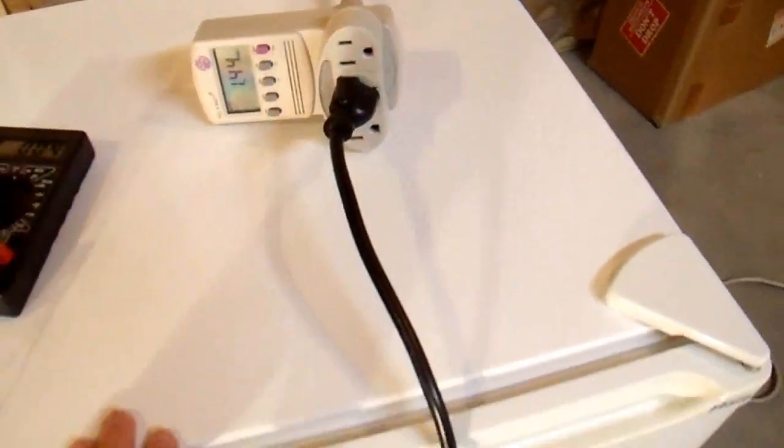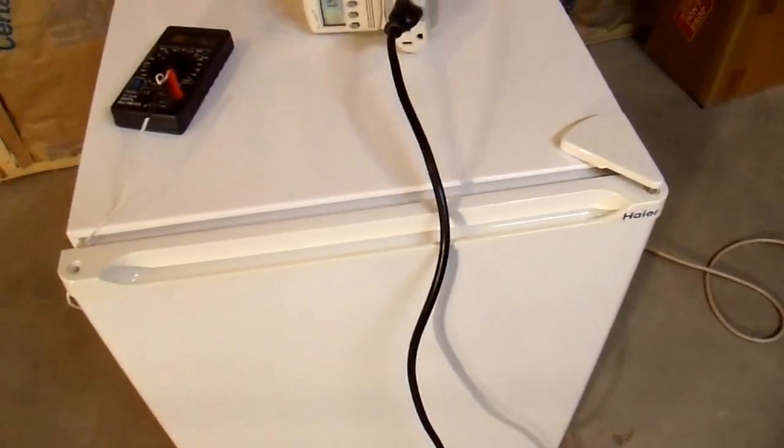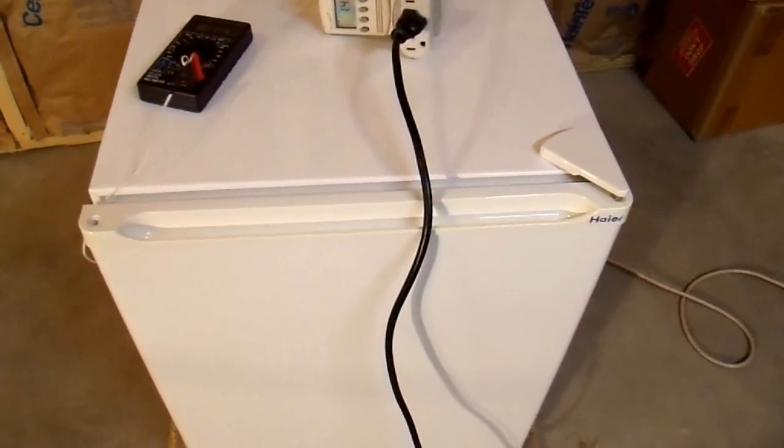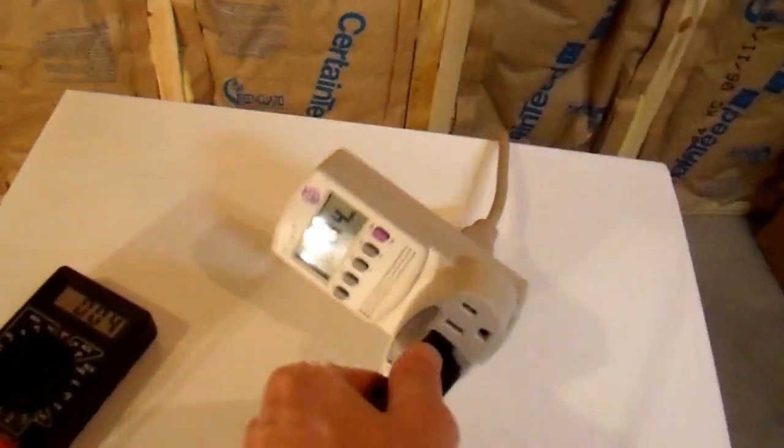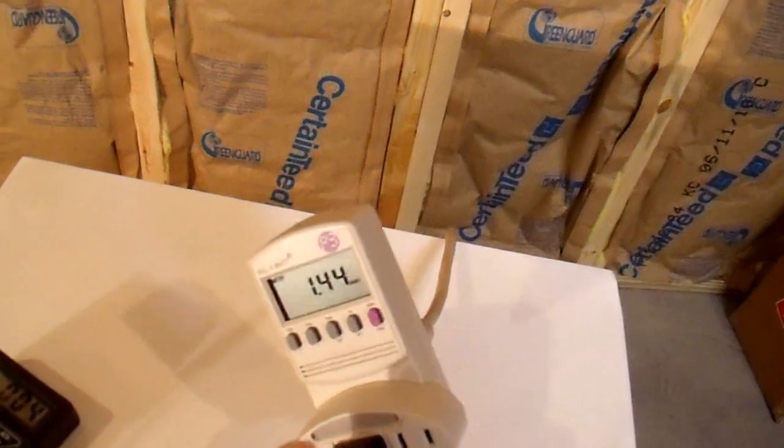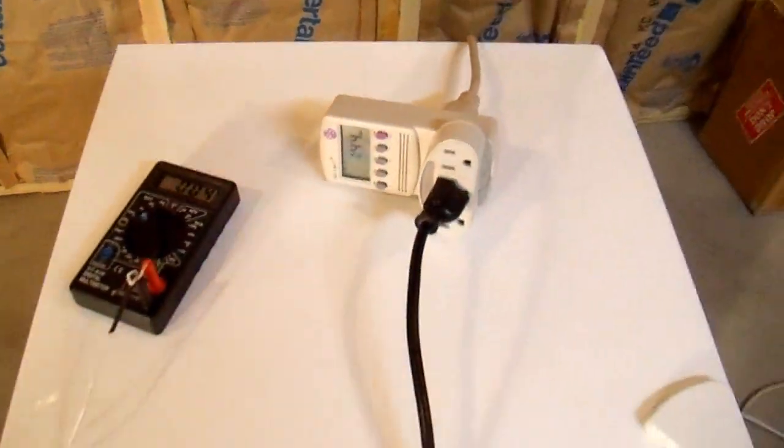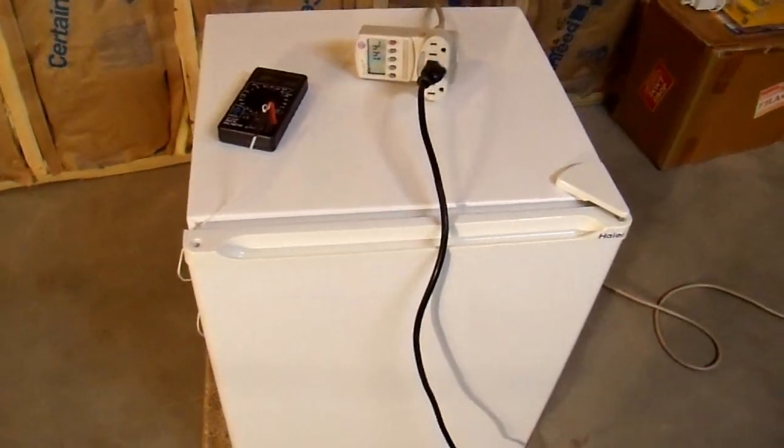And you can see that it's used 1.44 kilowatt hours during that time. So this refrigerator, sitting in a 60 degree environment, 60 degree Fahrenheit environment, without opening the door or using it, the refrigerator is completely empty right now. It takes about 1.5 kilowatt hour per day, which isn't too bad really. But let's see if we can improve it.